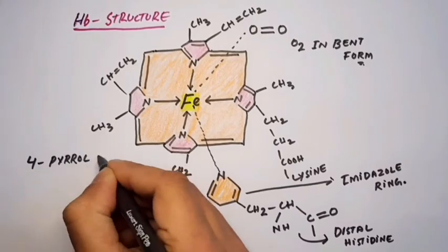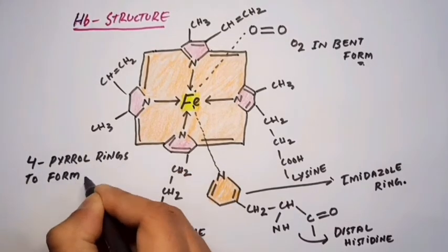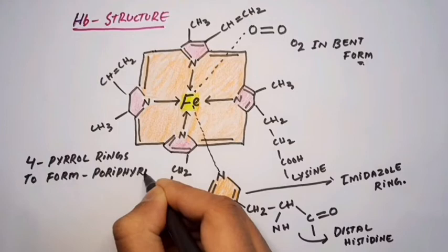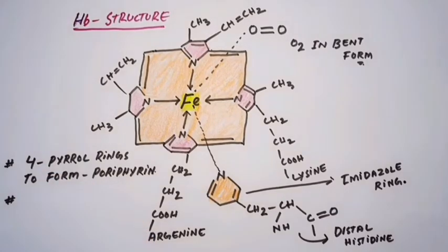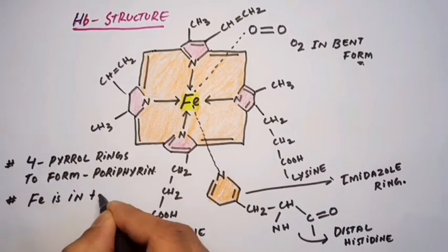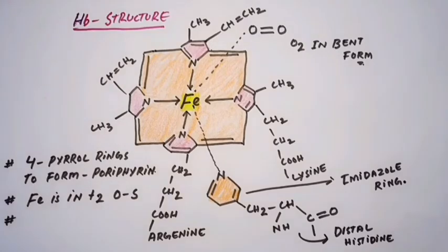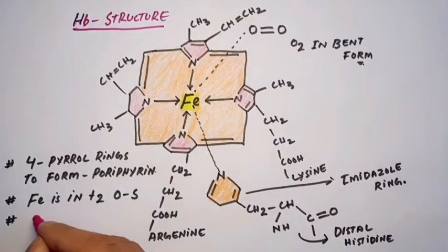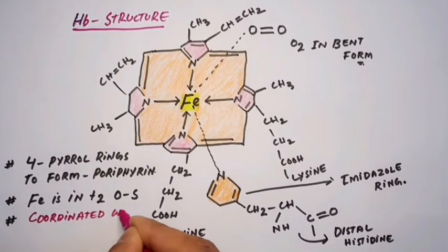Four pyrrole rings are joined to form the protoporphyrin or porphyrin ring. The central metal ion, iron, is in the plus two oxidation state coordinated with four nitrogen atoms.